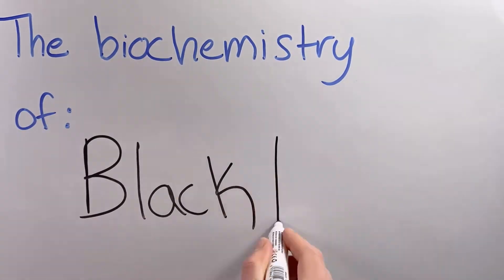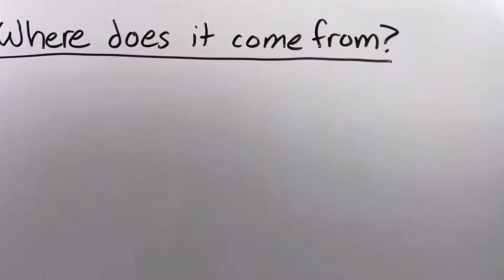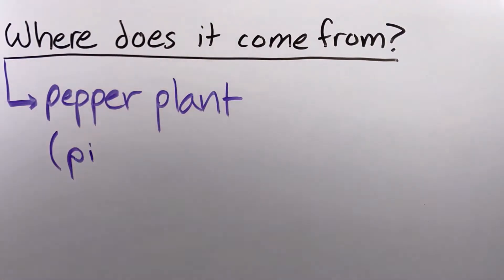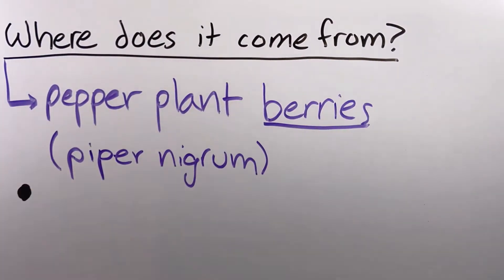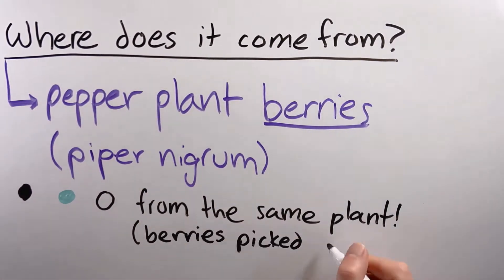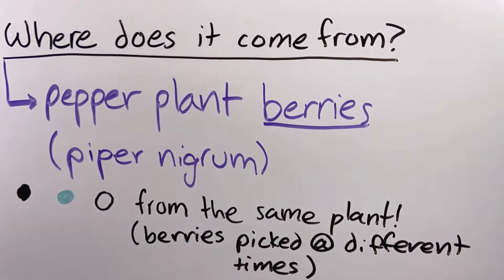This video breaks down the biochemistry of the spice black pepper. Black pepper comes from the berries of a pepper plant. Black pepper, green pepper, and white pepper actually all come from the same plant, however they have different colors and flavors because the berries are picked at different maturity levels.